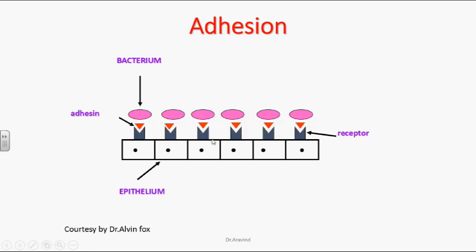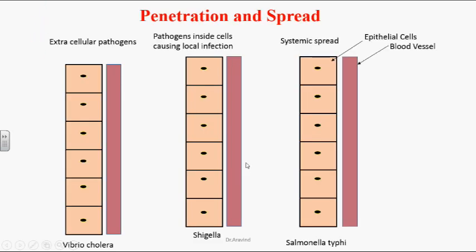Infection can occur by staying on the surface of the host epithelial cells, by entering into the epithelial cells, or by entering into the epithelial cells and bloodstream. After infection, the penetration and spread of the organism into human tissues occurs. This penetration and spread can occur in three ways.